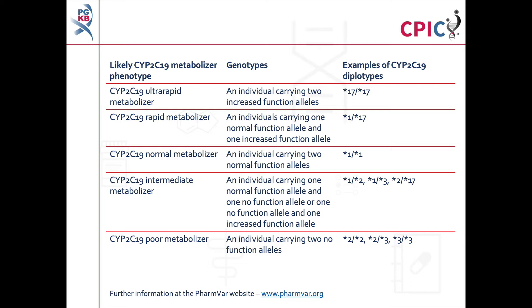An important caveat for all genotyping tests is that any alleles which are not detected in the assay are designated as star 1. This can include rare increased function, reduced function, and non-functional alleles which are not routinely screened for in some genotyping tests. Further information about CYP2C19 alleles can also be found on the PharmVar website at www.pharmvar.org. A link to PharmVar is also given in the description below this video.